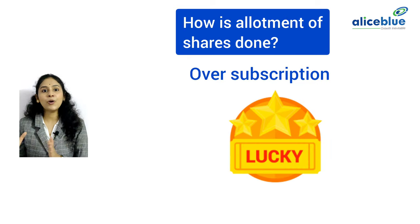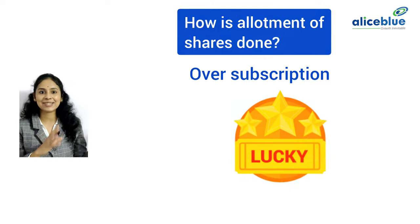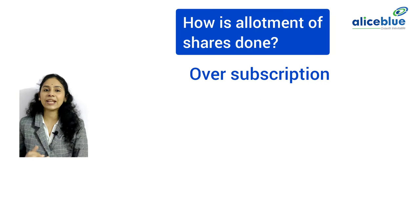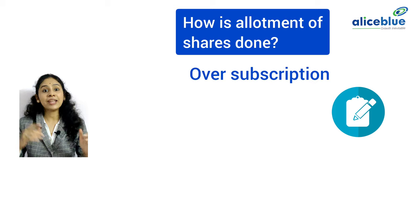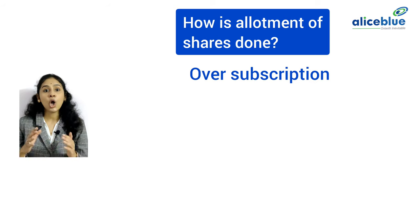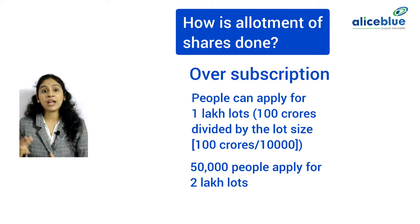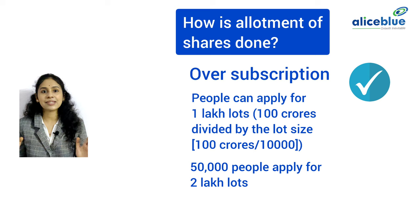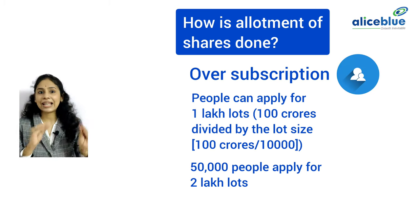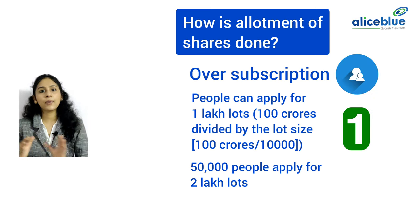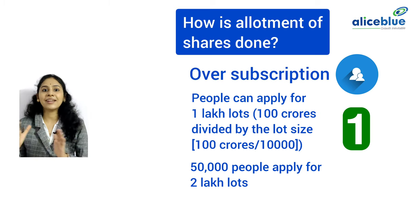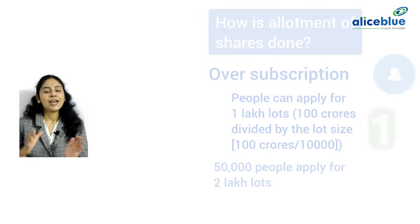Then 1 lakh people whose name appears in the lucky draw will get the shares. Second, Over Subscription by Number of Lots — overall people can apply for 1 lakh lots (100 crores divided by the lot size). So let us say 50,000 people apply for 2 lakh lots each. In this case, everyone will get the shares, but some people will get fewer lots as opposed to the number of lots they applied for, while some may get the exact number of lots.